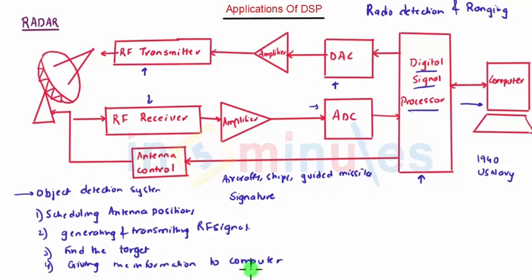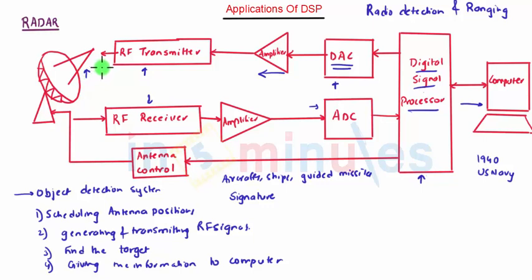The digital signal processor generates digital RF pulses which are converted to analog RF pulses using a digital to analog converter. Then the signal is amplified and sent to the antenna, which is used for transmission.